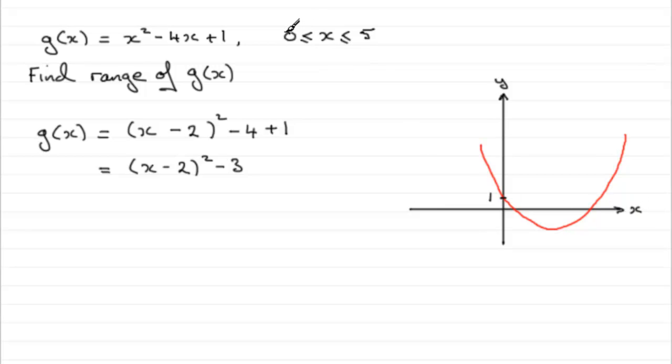It's for 0 to 5. So we're only interested in part of the positive side of this graph. So this part here has got to disappear. So we'll take that part out.